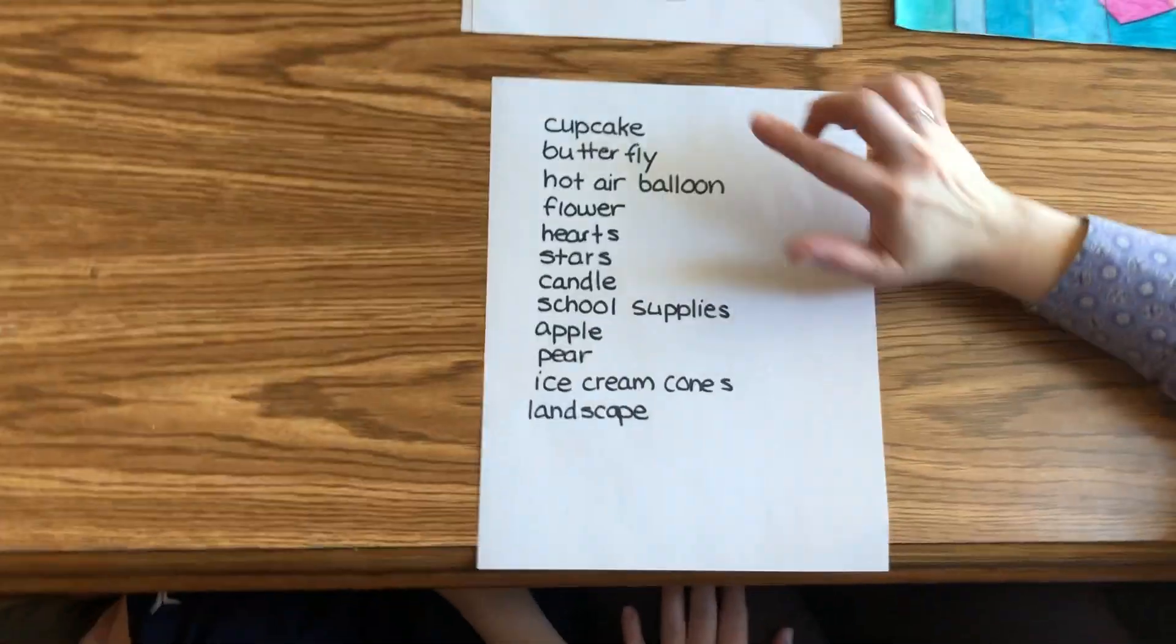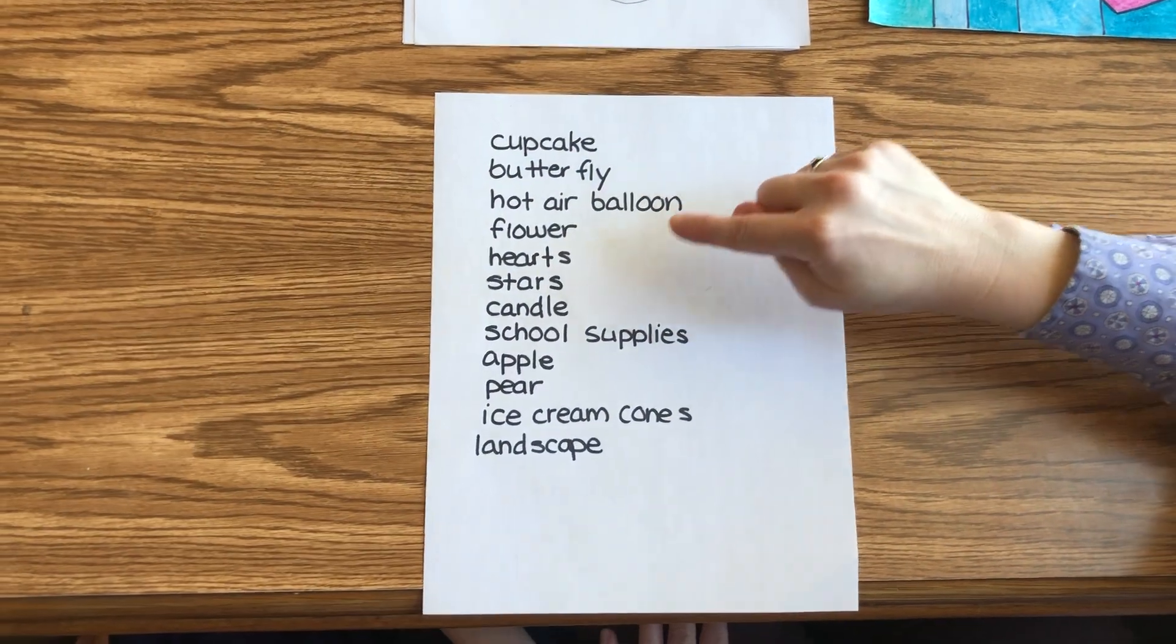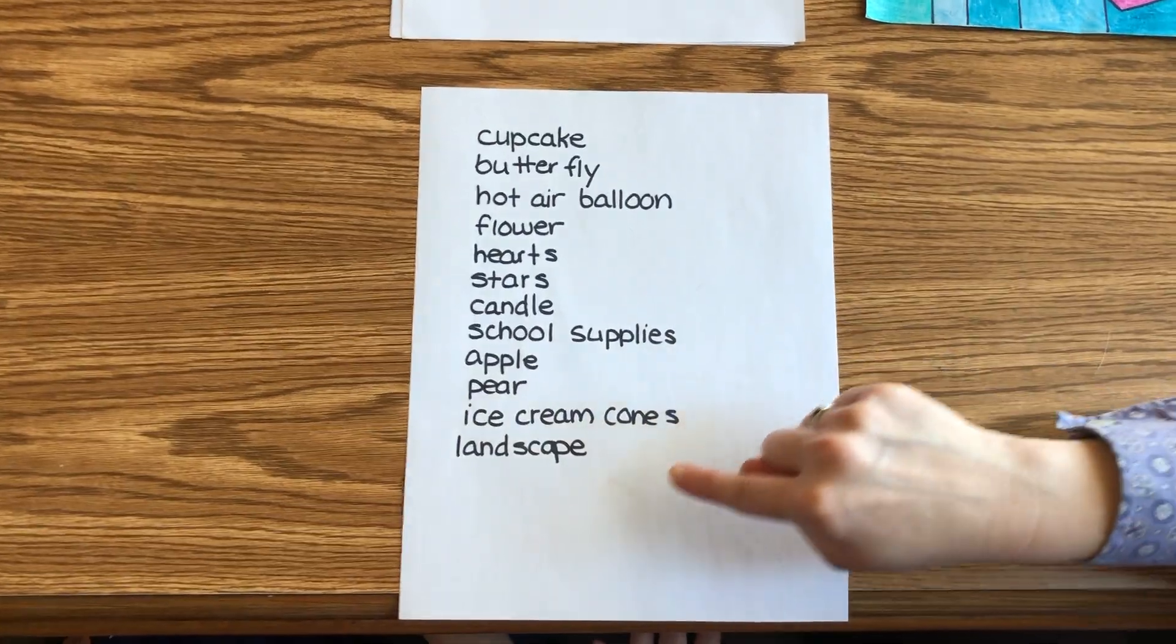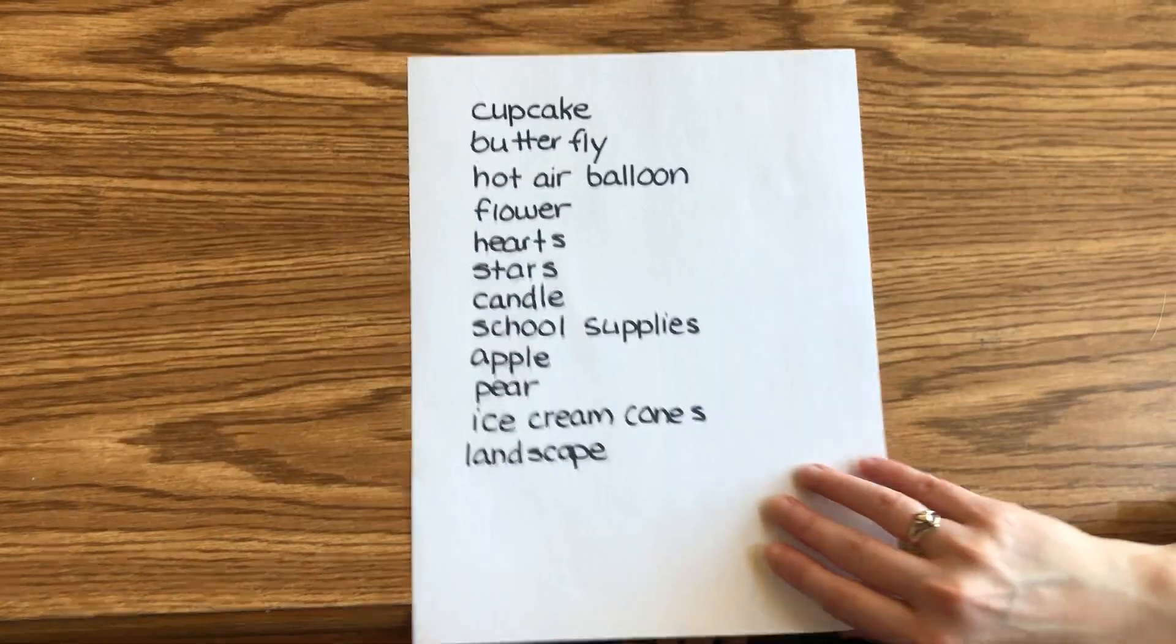Okay, so if you want to make something, you gotta start with something simple first. So you're going to draw like a cupcake, a butterfly, hot air balloon, flower, hearts, stars, candle, school supplies, apple, pear, ice cream cones, or a landscape. And you can see that my super second grader chose to do the landscape.